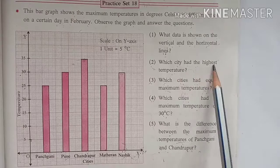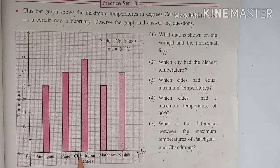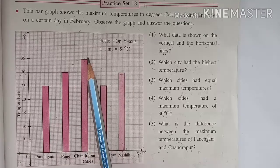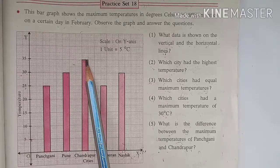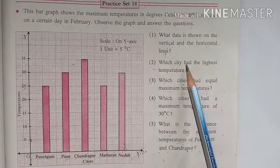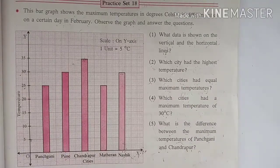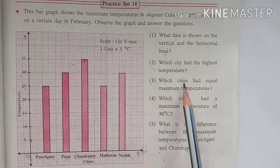Second question: which city had the highest temperature? Look here carefully. 35 degrees Celsius of Chandrapur. So Chandrapur city had the highest temperature.